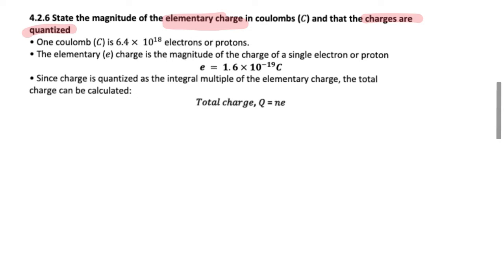Q has a unit of C. So one Coulomb of charge is 6.4 × 10^18 electrons or protons. That means if we take 6.4 × 10^18 electrons, we will get a charge of one Coulomb.